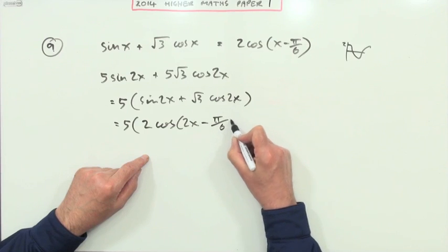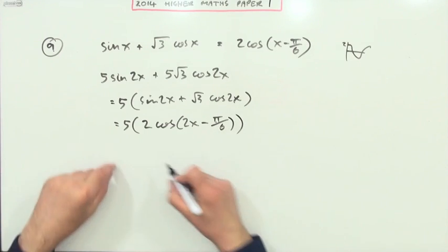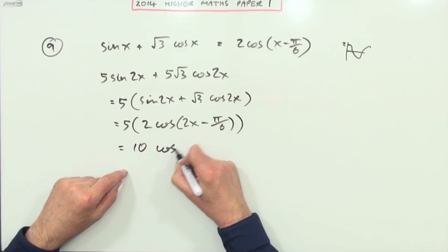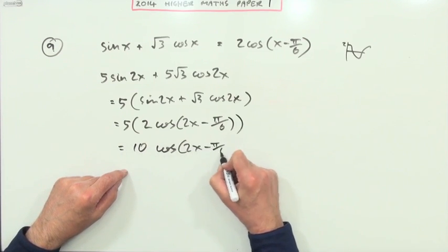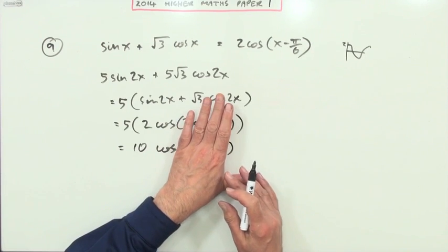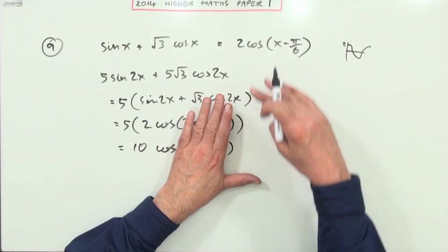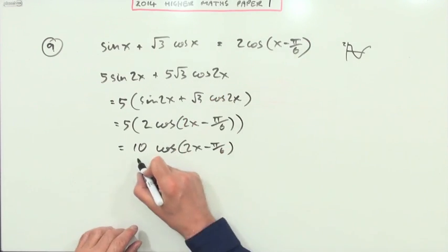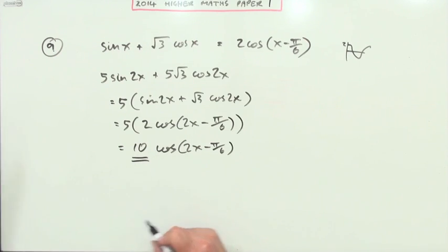This produces two cos two x minus π/6, giving ten cos(2x - π/6). Again, it's a cosine — it doesn't matter what the angle is. The most it can do is go from 10 to negative 10, so the maximum value is 10, which is answer B.